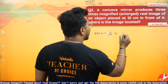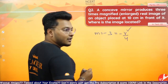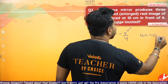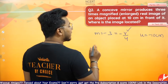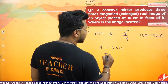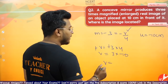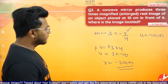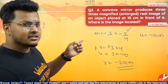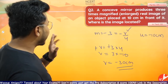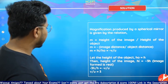So M equals minus 3. The formula for magnification in a mirror is M equals minus V by U. The object distance U is minus 10 cm, according to sign convention. So: minus 3 equals minus V divided by minus 10, which gives V equals 3 into minus 10, so V equals minus 30 cm.